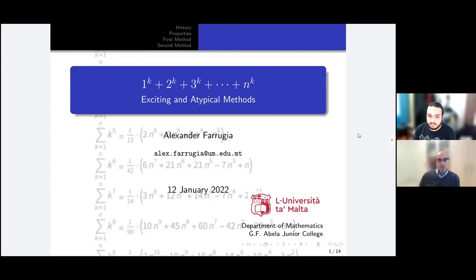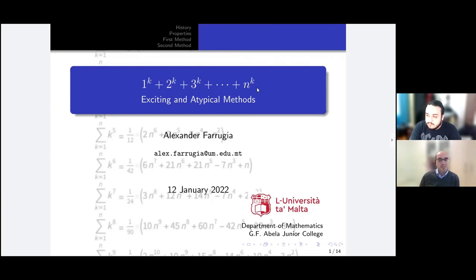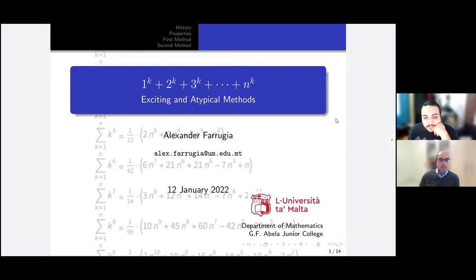Just to make this immediately clear, these powers will be positive integers. So they won't be negative — there will be no Riemann-Zeta function or anything like that — and they won't be fractional either. So k is 1, 2, 3, 4, and so on.